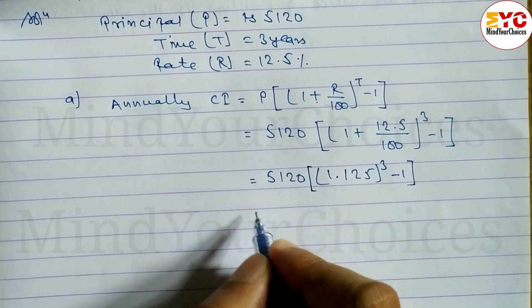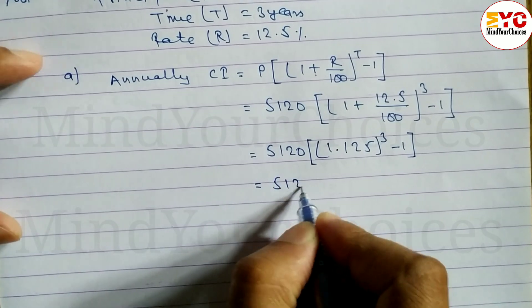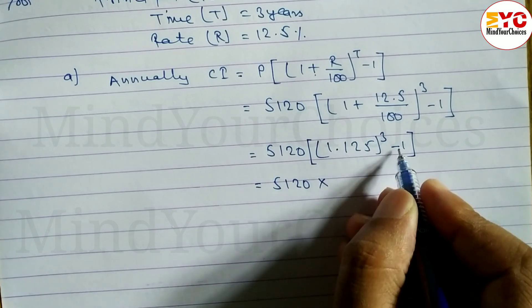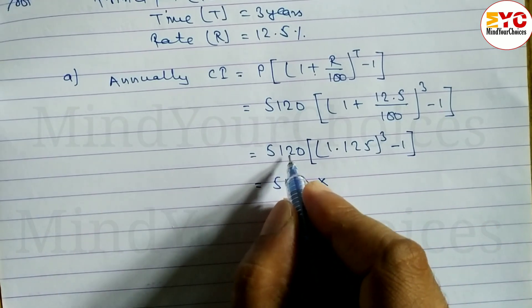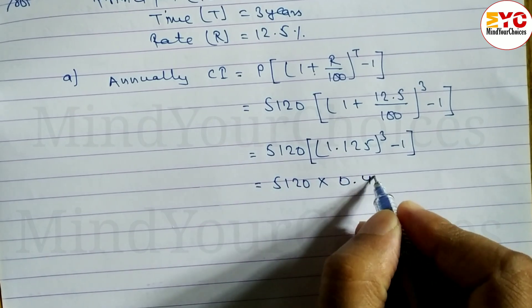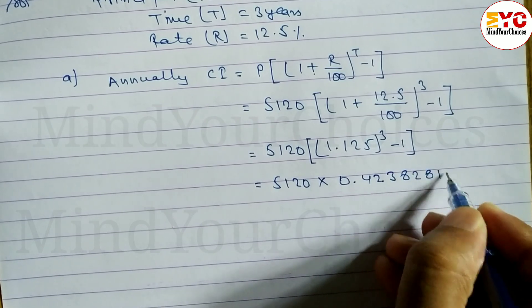Writing step by step: 5,120 into 1.125 cubed minus 1, which equals 5,120 multiplied by the calculation 0.423828125.